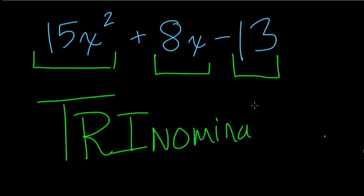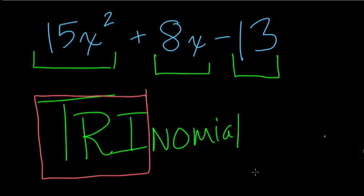So the trinomial itself is a polynomial, of course, with three terms, as in a binomial is a polynomial with two terms, right? And a monomial is a polynomial with one term.